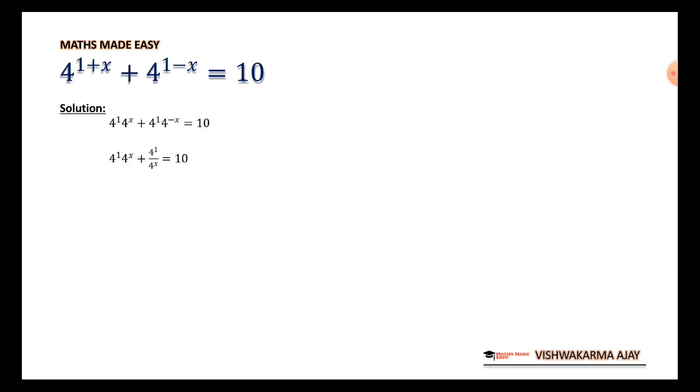Therefore we have 4^1 × 4^x + 4^1 × 4^(-x). This 4^(-x) can be written as 1/4^x.